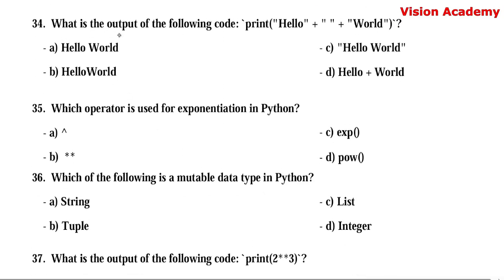Question number 34. What is the output of the following code: print("hello" + " " + "world")? Option A: hello world. Option B: helloworld (no space). Option C: "hello world" (in double quotation marks). Option D: hello + world. Here, option A — hello world (with space) — is the right answer.